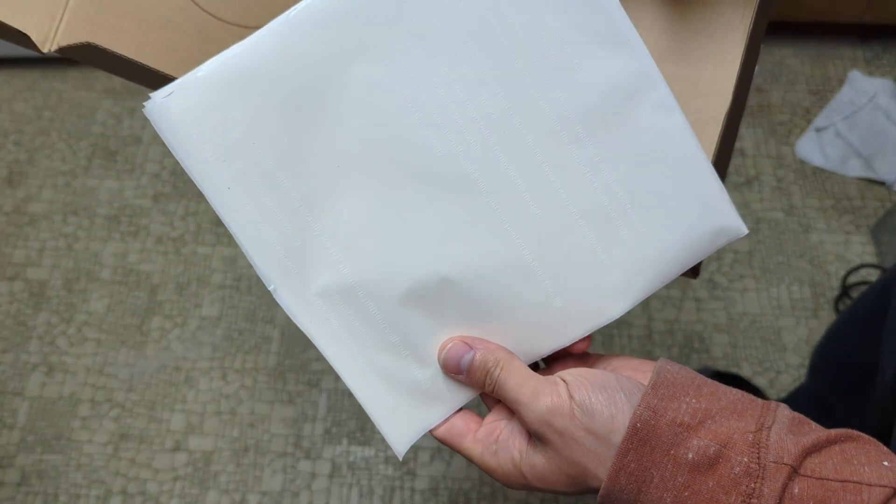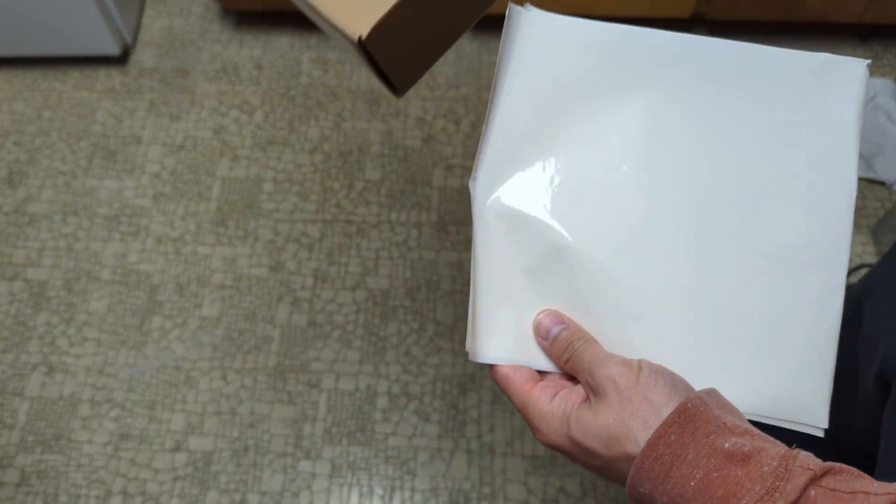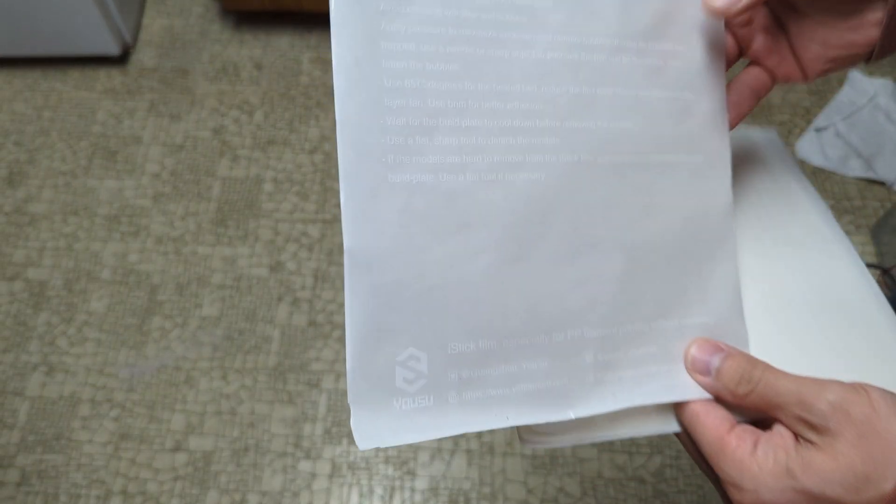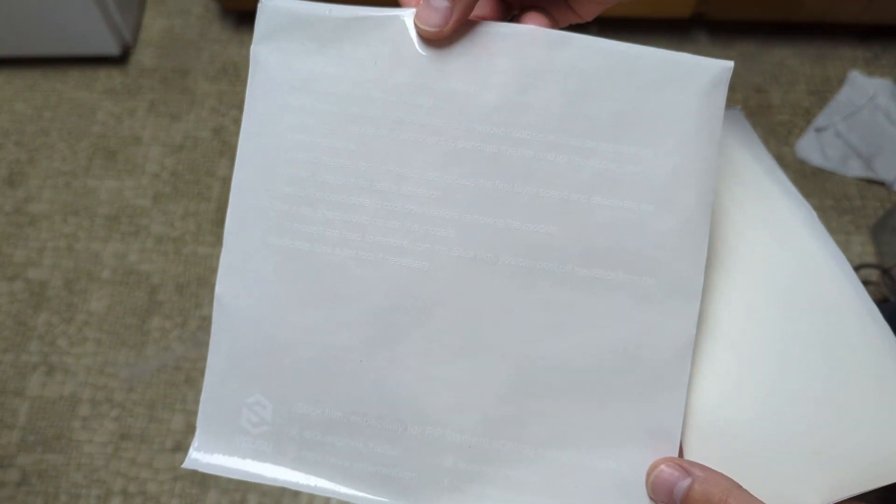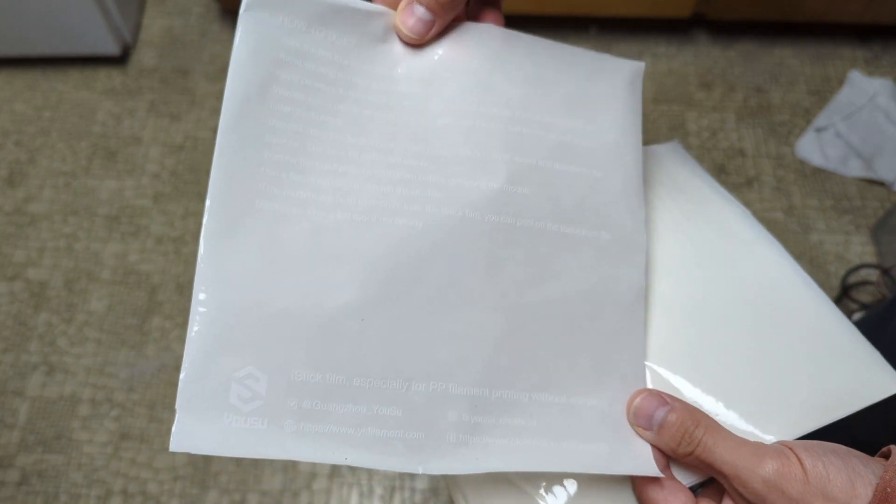After opening up the box, obviously the filament was in there, but it also comes with these five adhesive bed sheets that you place on your printing bed while you print, and this helps the polypropylene stick to your printing bed so that you can have successful prints with this polypropylene.